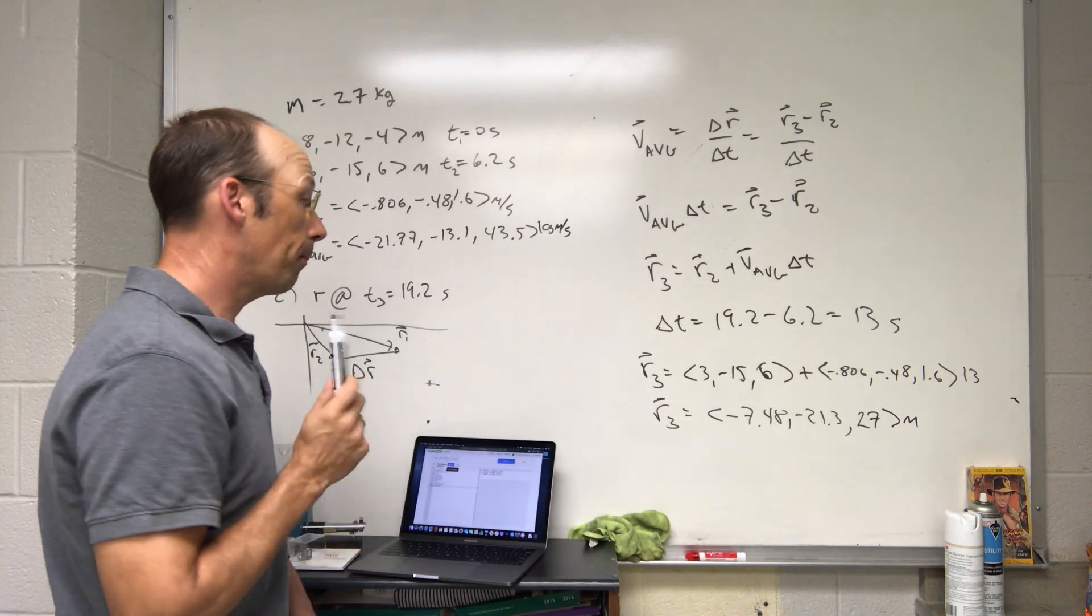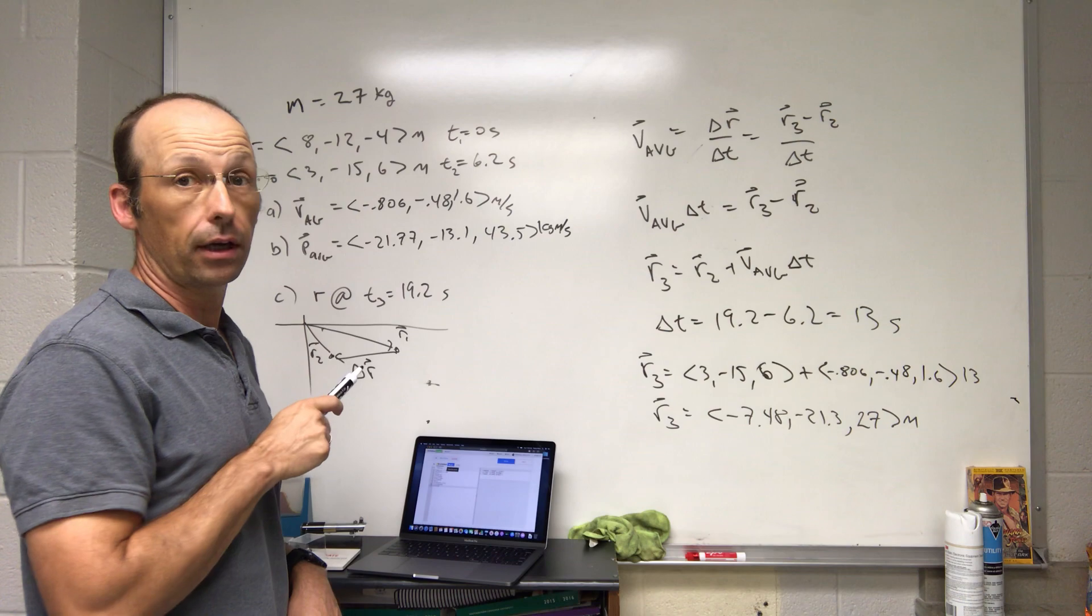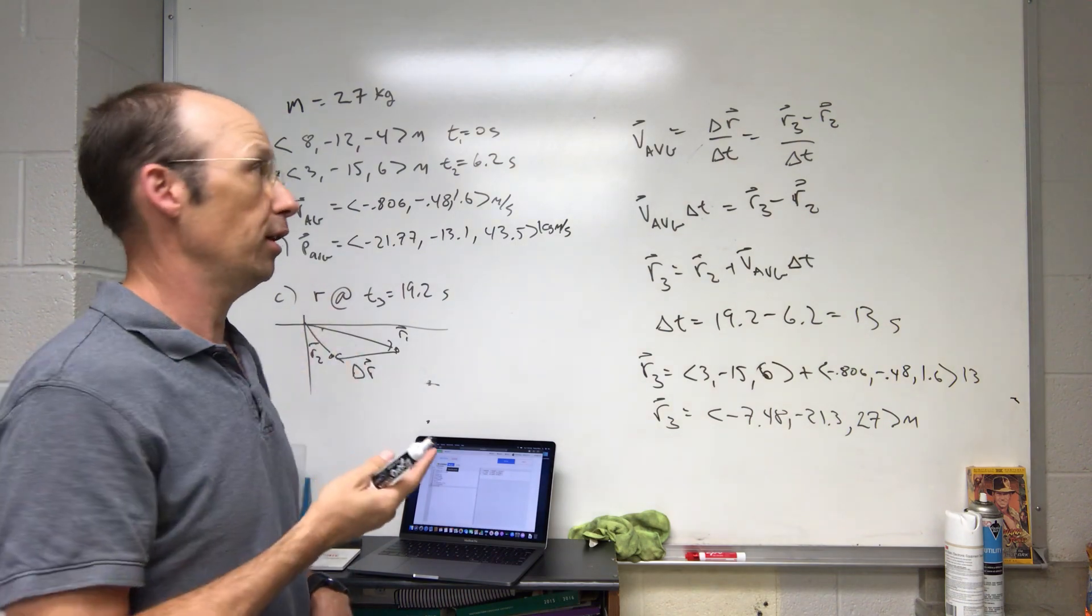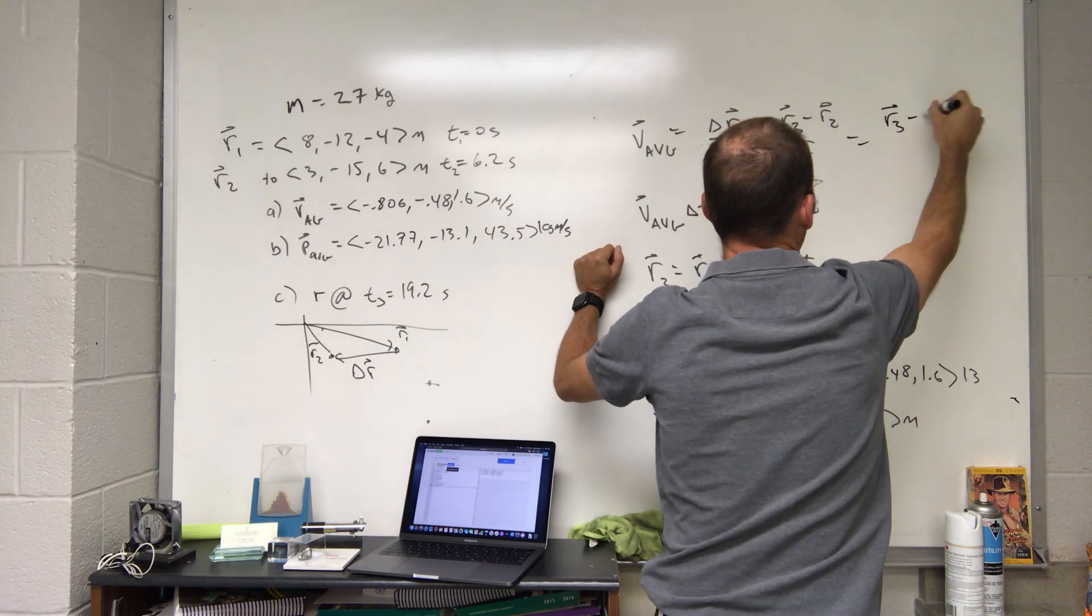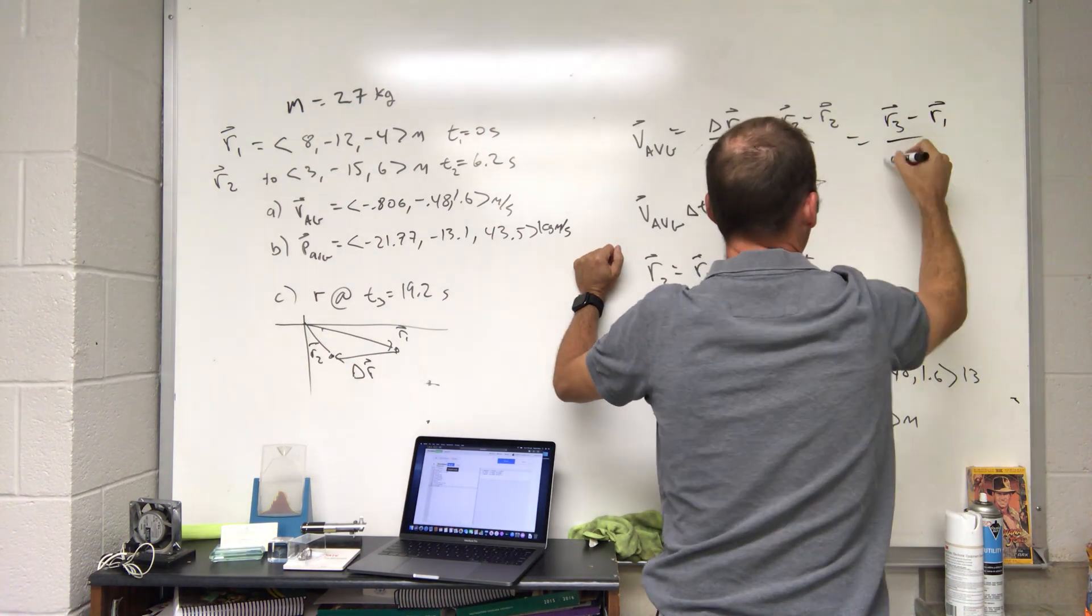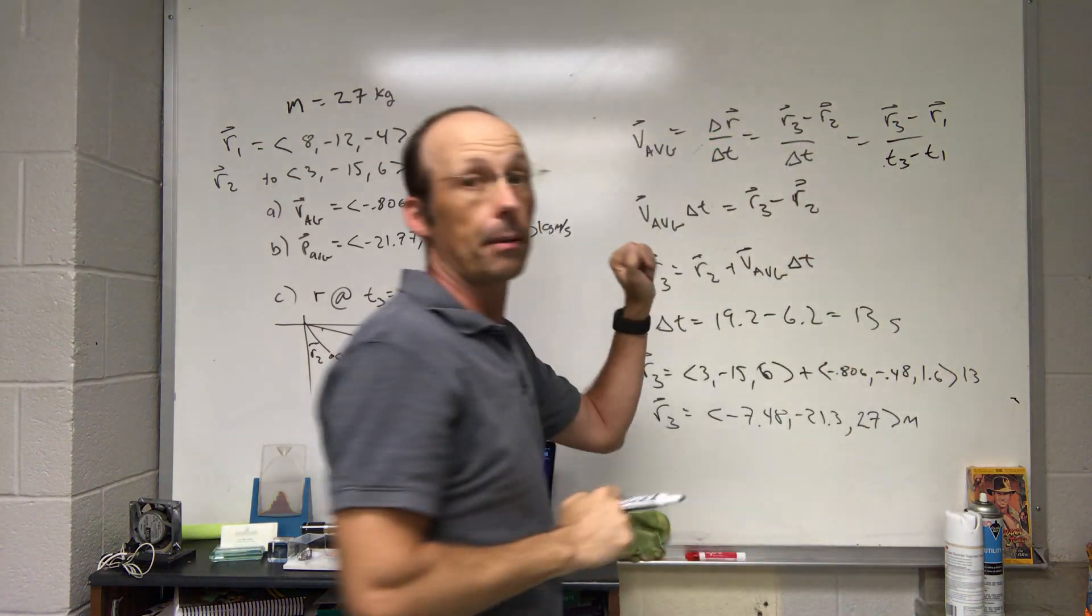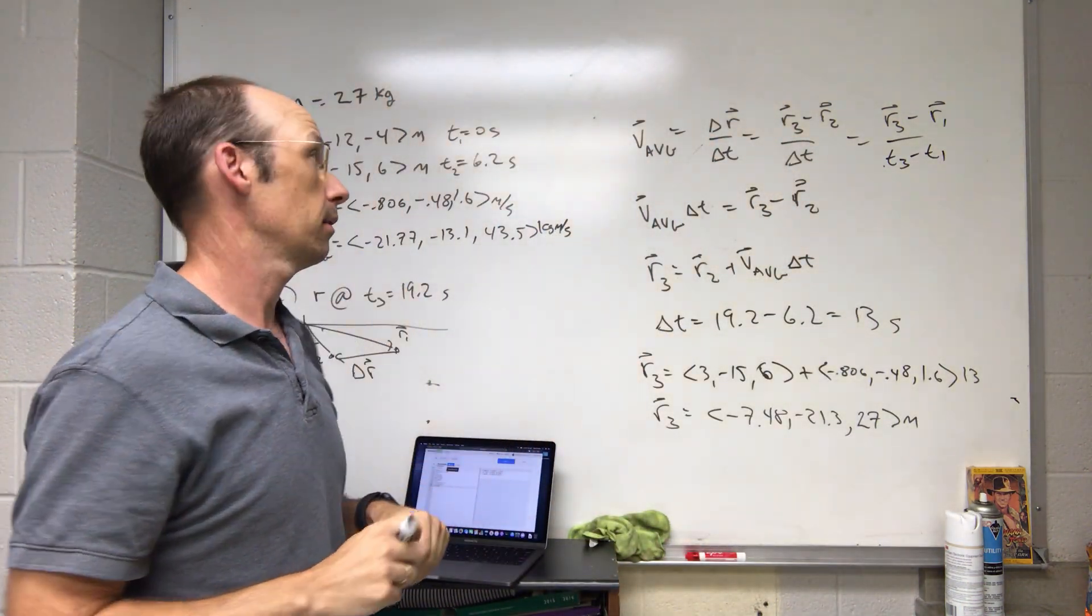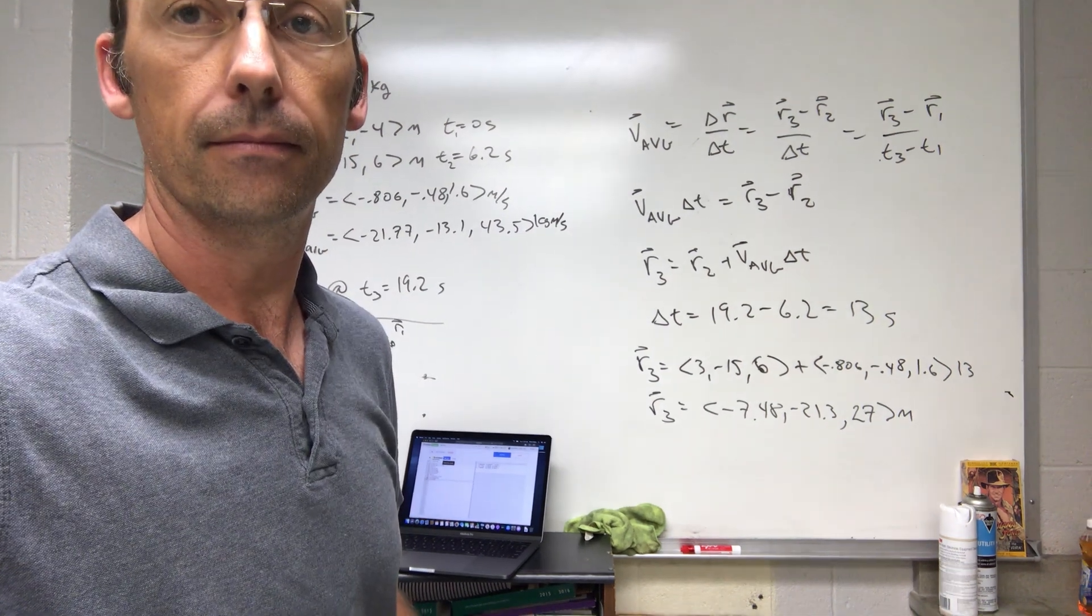Now one of the important things is that I didn't have to use 0, 2, and 3. I actually could have used 1 and 3. I could have done the same thing and said this is r3 minus r1 over delta t, t3 minus t1, and I should get the same answer. Okay, redo it and you should be able to check that. But that's it.